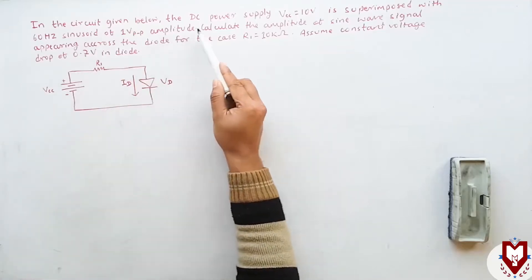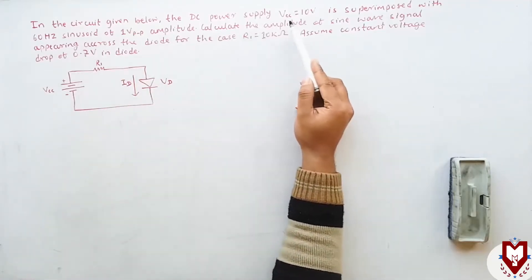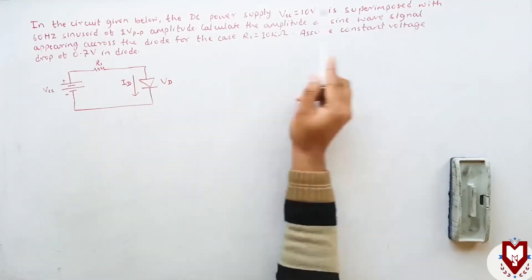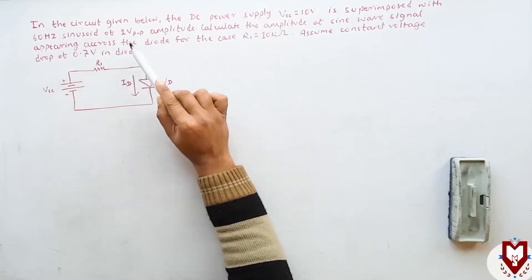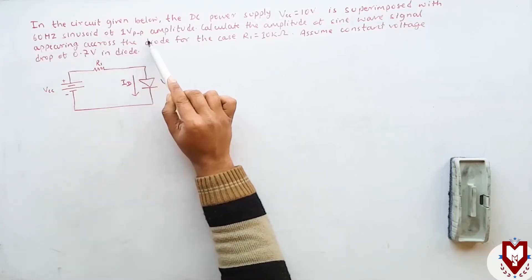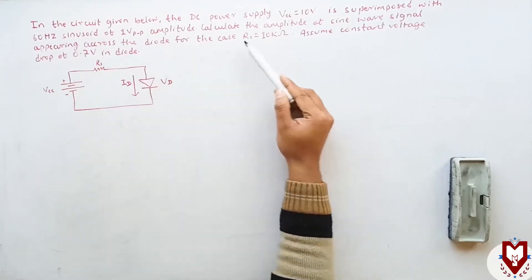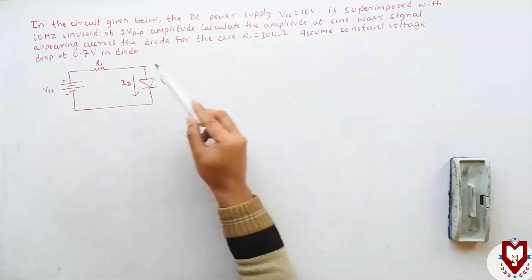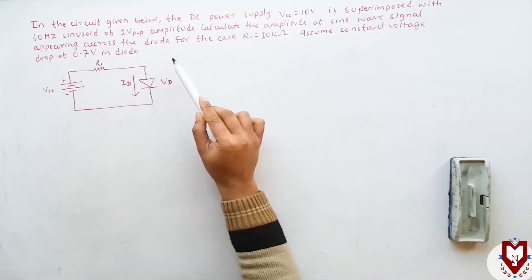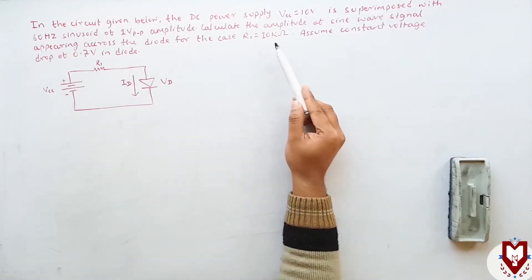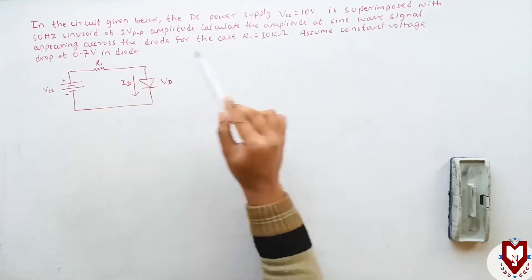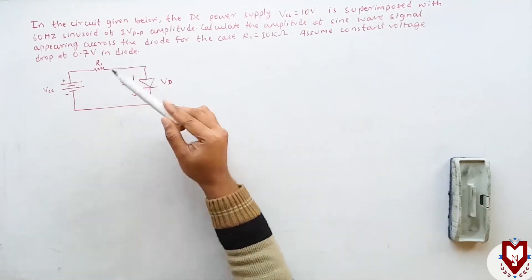In the circuit given below, the DC power supply VCC equals 10 volt is superimposed with a 60 Hertz sinusoid of one volt peak-to-peak amplitude. Calculate the amplitude of the sine wave signal appearing across the diode for the case R1 equals 10 kilo ohm. Assume a constant voltage drop of 0.7 volt in the diode. Question number 2073.